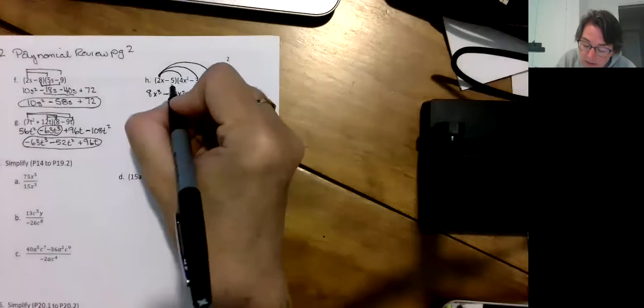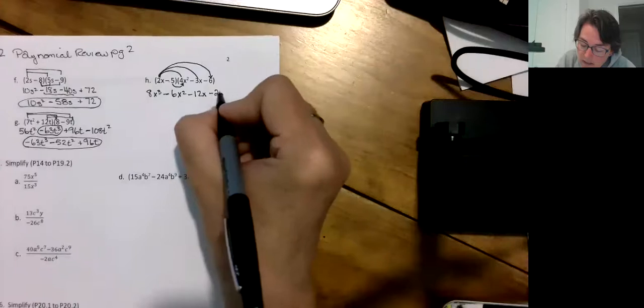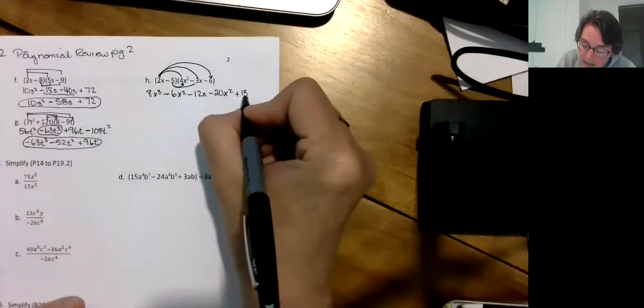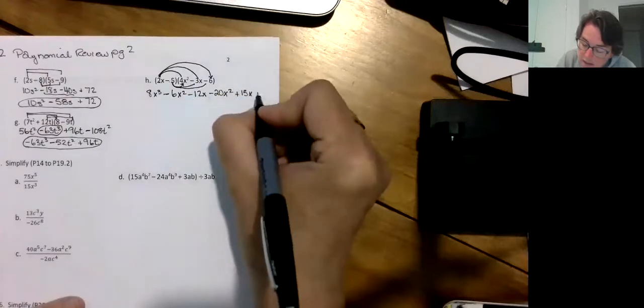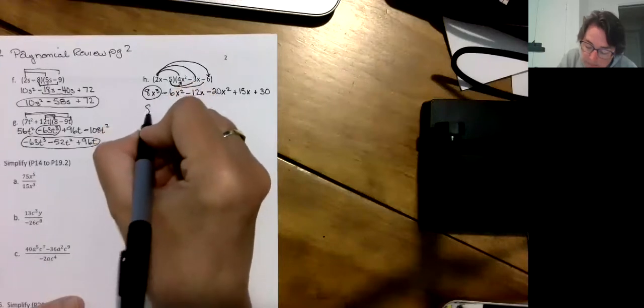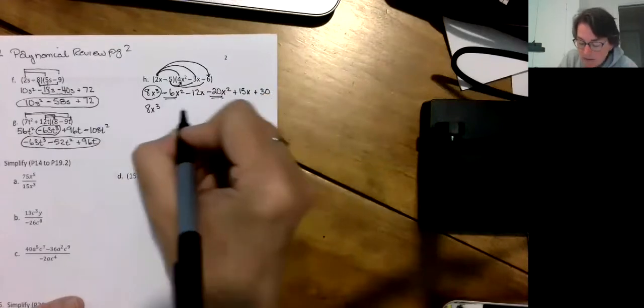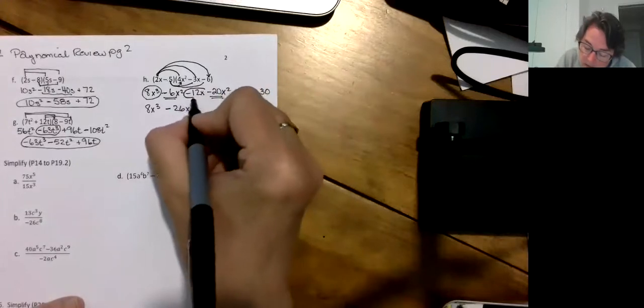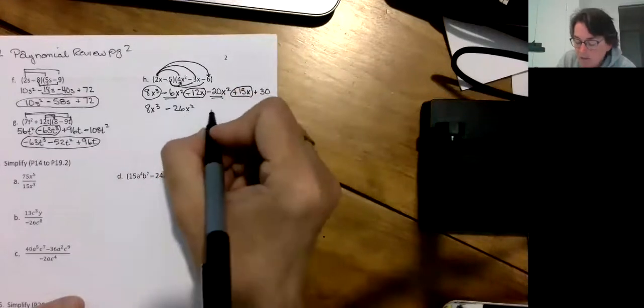It's kind of like the FOIL concept except you're distributing three times instead of just two. And then I turn around and do the exact same thing with the minus 5. Minus 5 times 4x squared is minus 20x squared. Minus 5 times minus 2x is plus 10x. Minus 5 times minus 6 is plus 30. So I've got 8x cubed. I've got minus 4x squared, another minus 20x squared is minus 24x squared. And then I've got minus 12x and 10x, that's minus and that's plus, so the difference there is minus 2x plus 30.